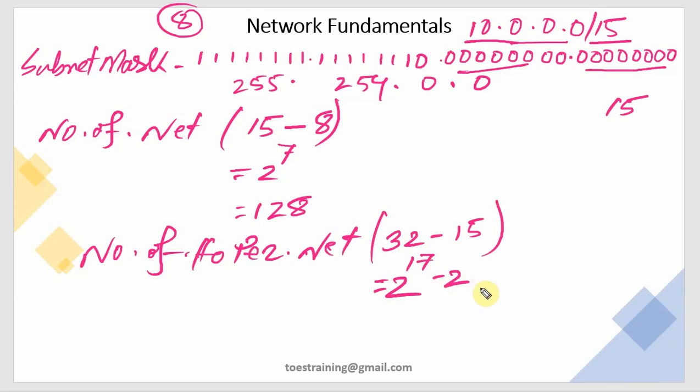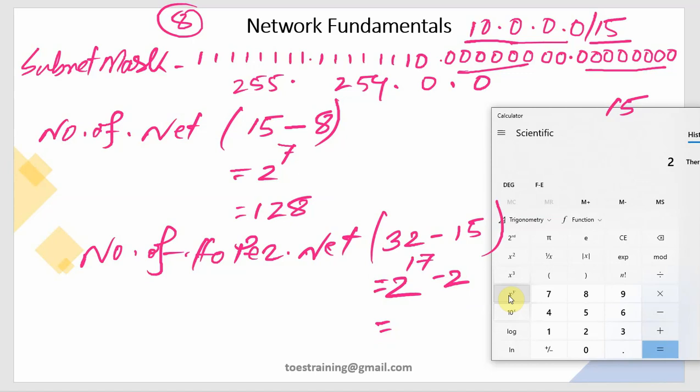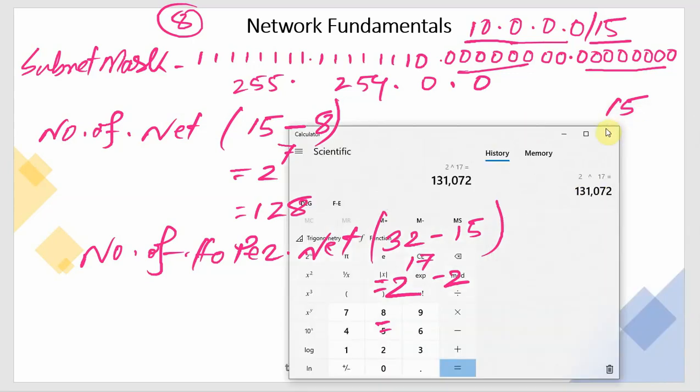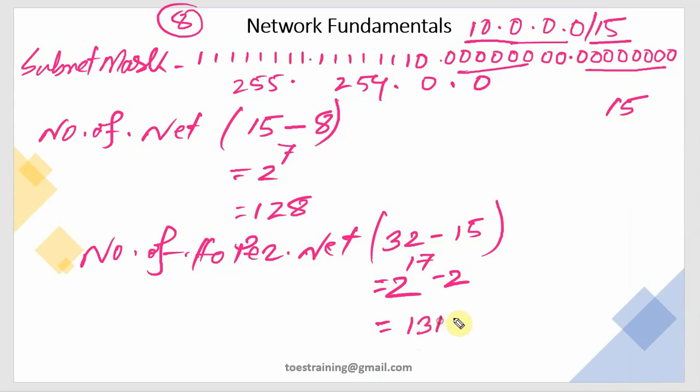For number of hosts: prefix 15, we subtract. We always exclude 0 and 255 because host part all 0 is the network address and all 1 is broadcast. So the number of valid hosts is 2 to the power of 17 minus 2, which equals 131,070 valid IP addresses.